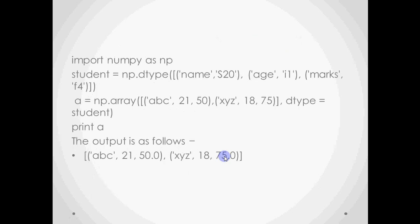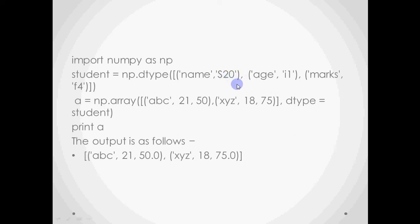This is an example where we use a user-defined data type. If you want, you can create your own data type. We have integers, characters and everything built in, but you can also create your own. Here, 'student = np.dtype()' — with dtype I can create a new data type. I pass a list of tuples, where each tuple has an attribute name and its data type. For example: 'name' with S20 (string of max 20 characters), 'age' of type integer, and 'marks' of type float.